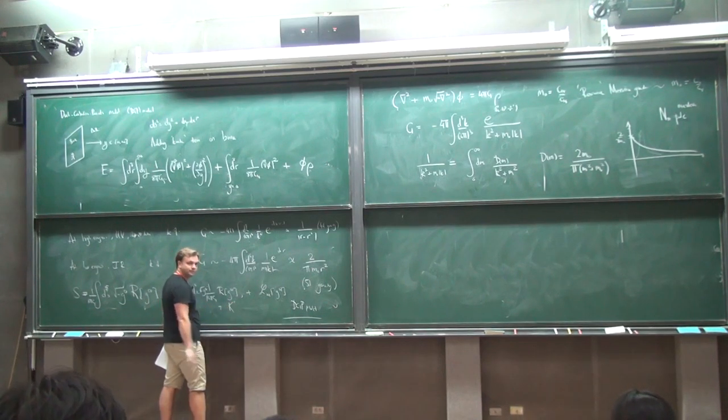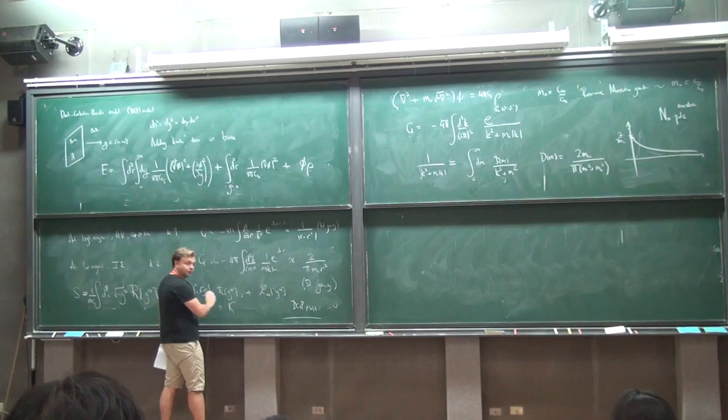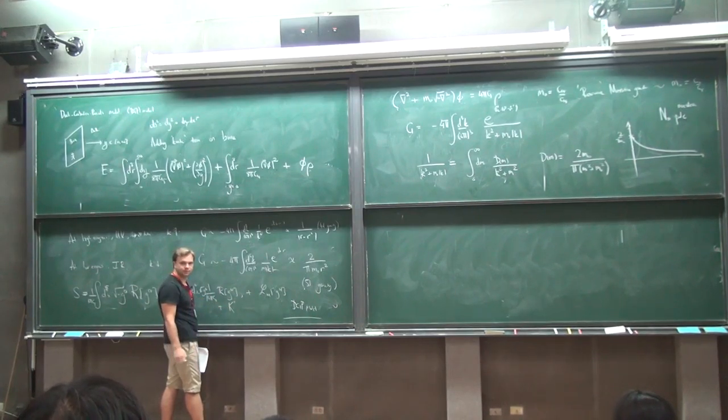An extrinsic curvature term with an arbitrary coefficient, is that possible? In principle, it's possible. In an effective field theory sense, that's certainly possible, yes.